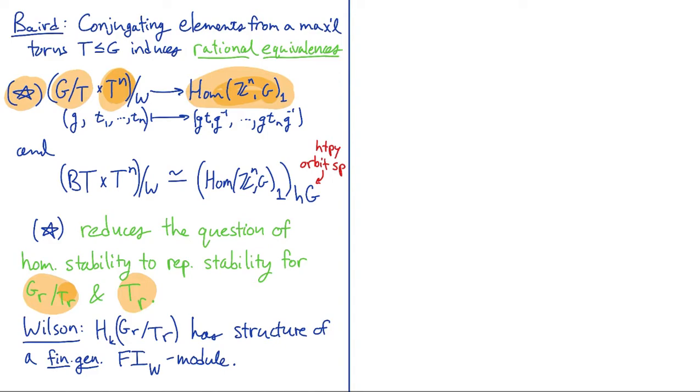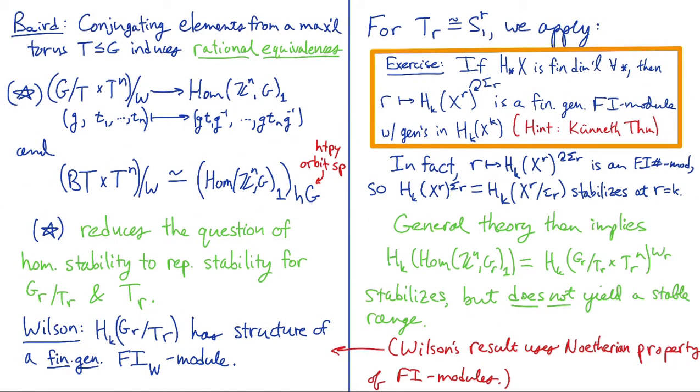So Wilson showed that as you look through one of these sequences, any of these sequences of classical Lie groups, the homology of G_R mod T_R is actually a finitely generated FI_W module. So if you're not familiar with this theory of FI_W modules, just think in the unitary case, if we're thinking G_R is the unitary group of rank r, then we're just talking about FI modules. In general, there might be a larger Weyl group, and we're building in a little more than just a symmetric group action.